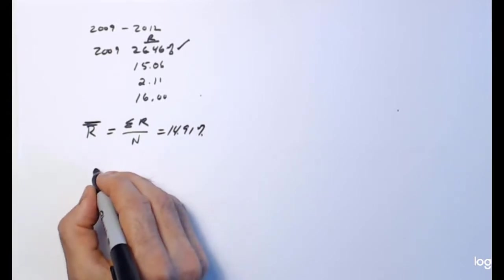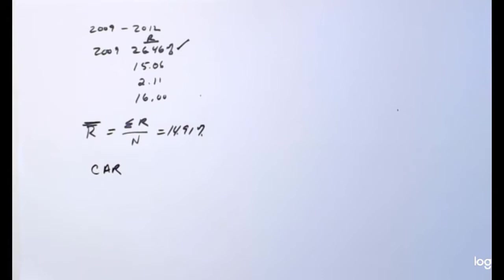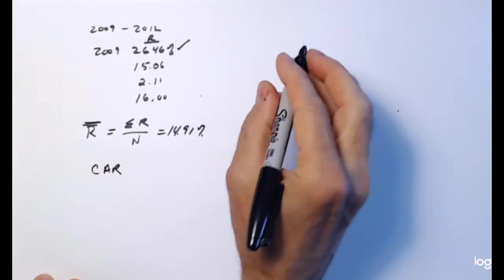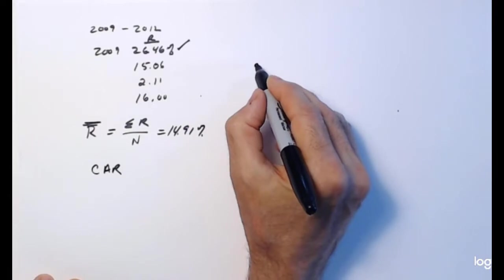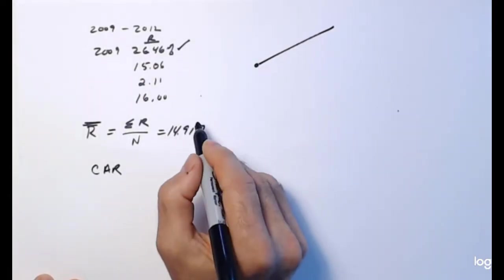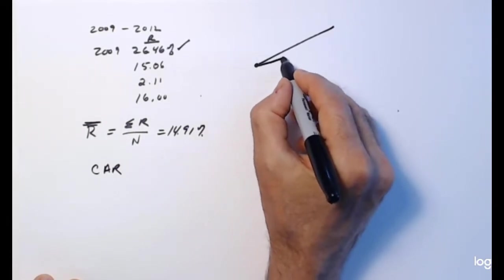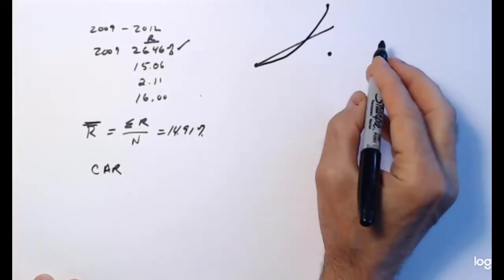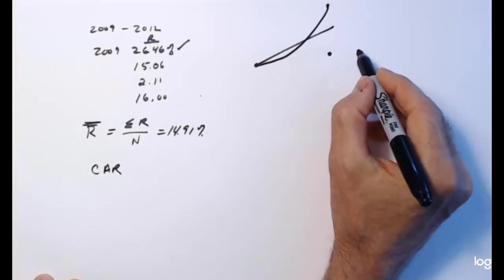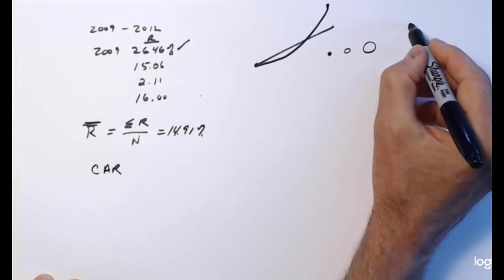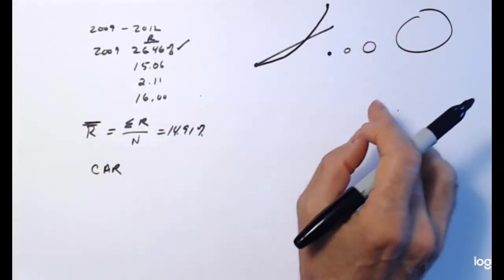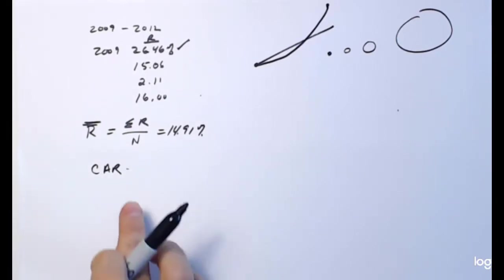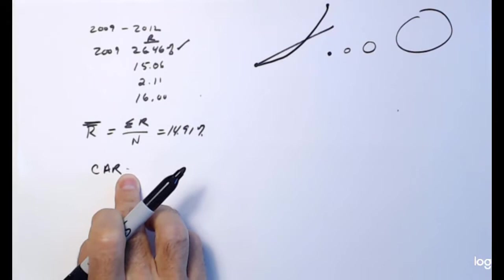Now we want to look at compound average returns — CAR — or geometric returns. The arithmetic average doesn't reflect compounding. In finance, money compounds: it doesn't grow linearly but exponentially, like a snowball effect. You start with a small snowball, roll it along, and it gets bigger and bigger. So we need to capture that compounding effect in what's called a compound average return or geometric average return.